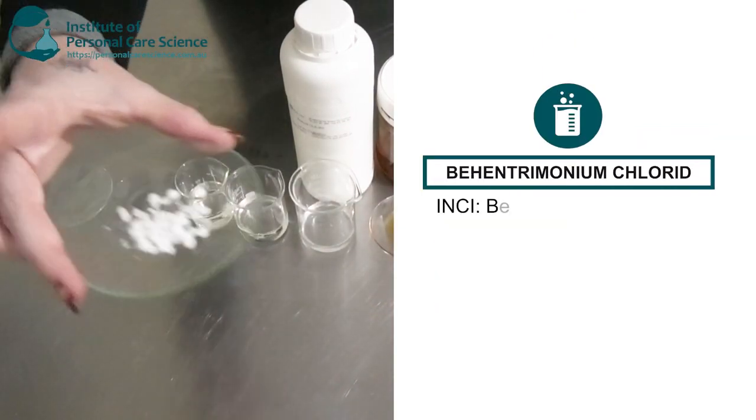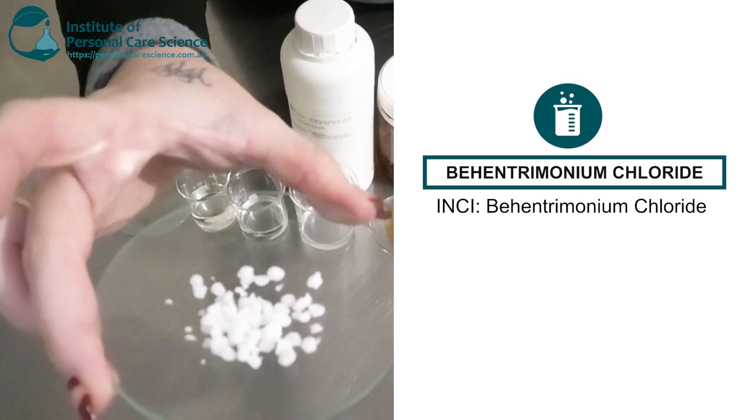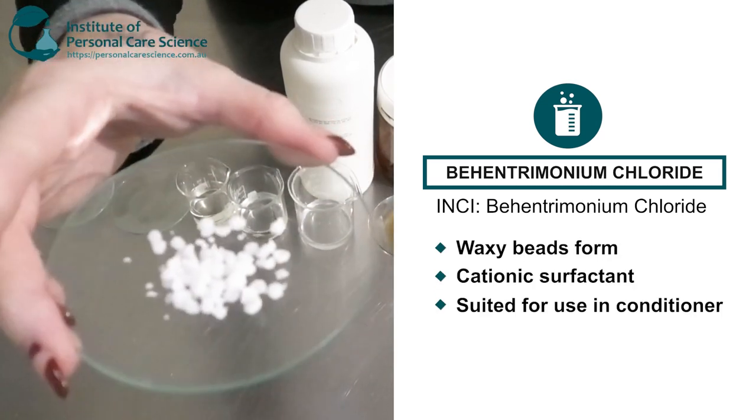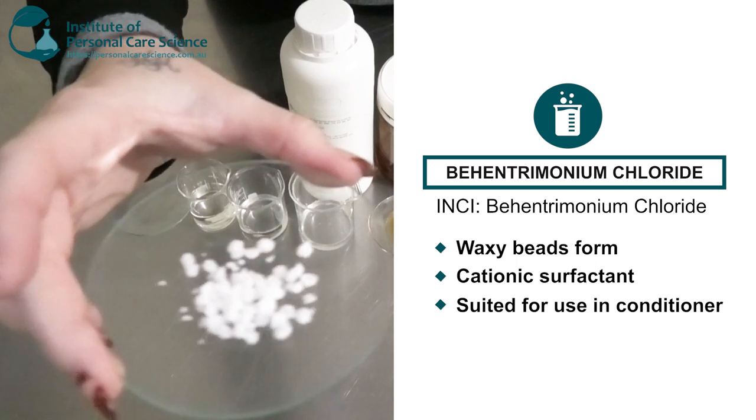And lastly I have some behentremonium chloride. This is a cationic surfactant. So this is what is used in conditioners to give that nice beautiful conditioning feeling to hair.